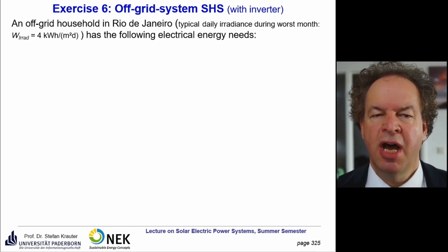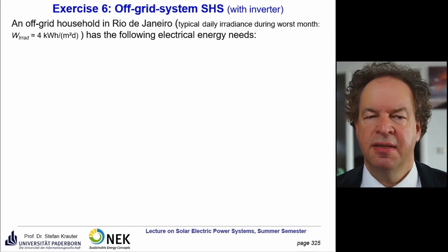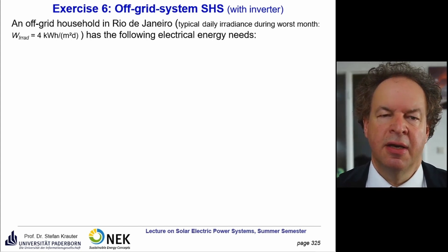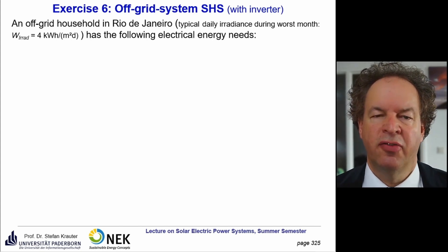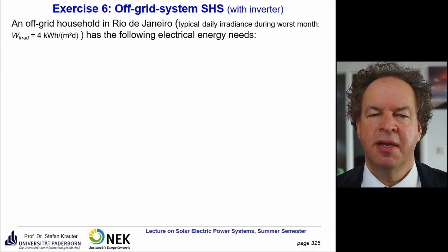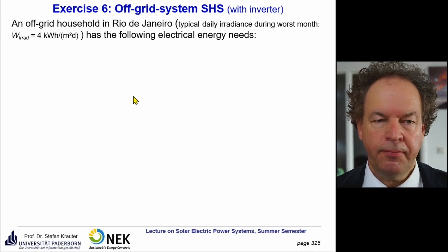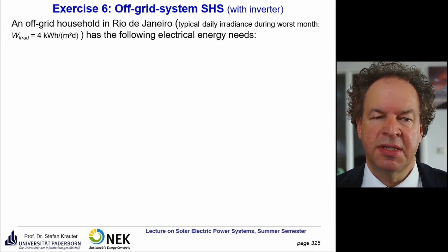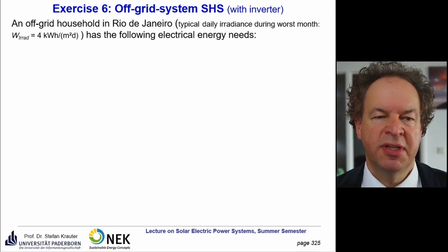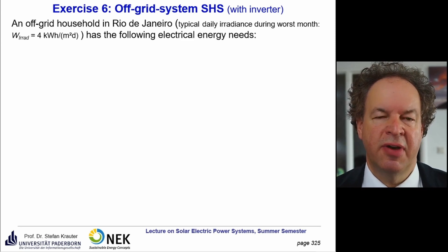We now present the solution to Exercise 6: the design of an off-grid system with an inverter. As a repetition, we discuss a tropical solar home system with the following electricity needs.